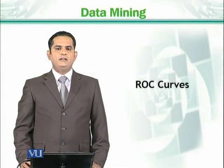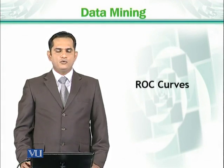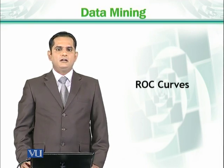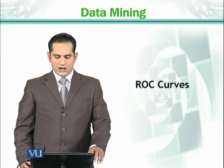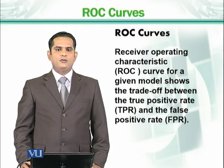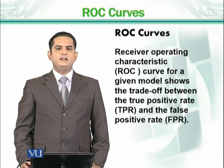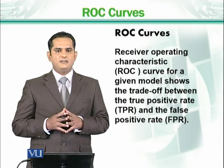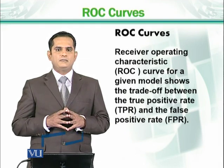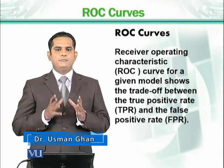Whenever we want to evaluate different classifiers, there are several mechanisms. All these mechanisms are based on numerical values, but is there a major graphical display method? The answer is ROC curves. ROC stands for Receiver Operating Characteristics. This is basically a combination of true positive rate and false positive rate, displayed graphically.